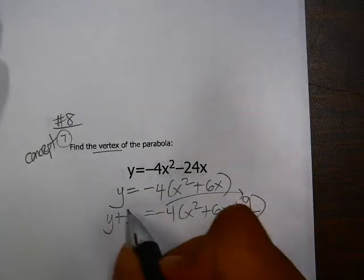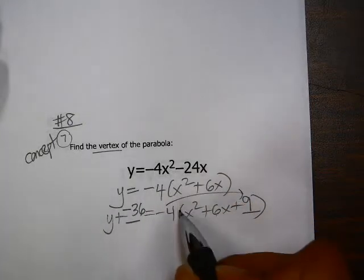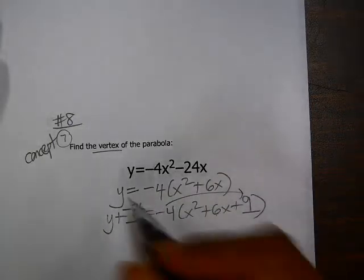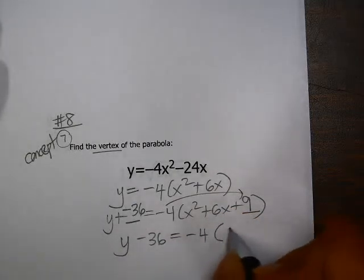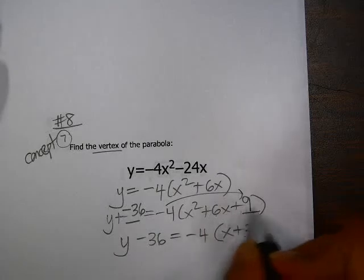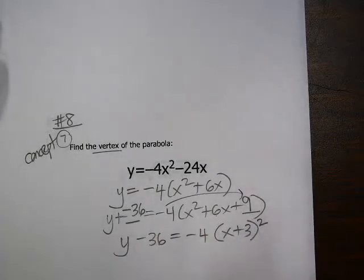On the other side of the equation, I need to add a negative 36 because of the negative 4 that's out front. So that gives you y minus 36 equals negative 4. x squared plus 6x plus 9 is x plus 3 squared.